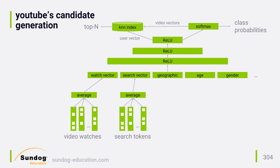Not enough users rate videos explicitly for the data to be useful. Instead, they rely on implicit signals, such as which videos you actually watched and what you searched for.